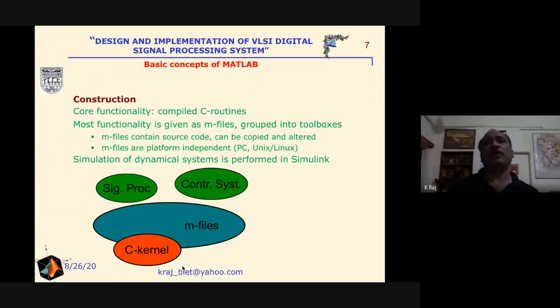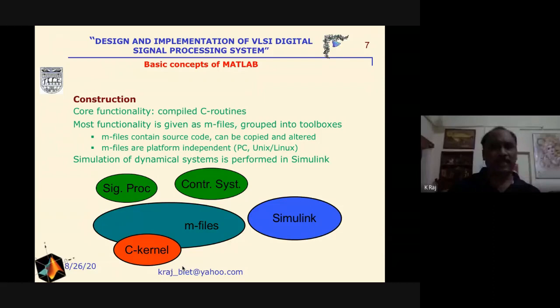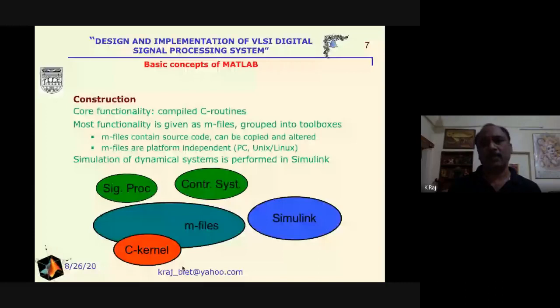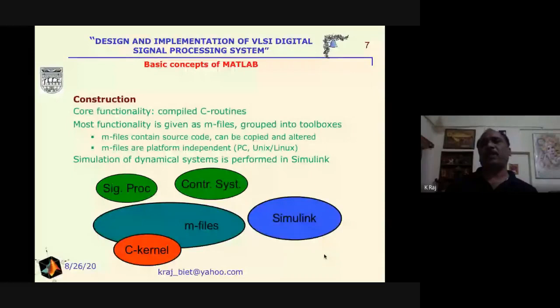If we use many .m files to cover a particular field — for example, signal processing or control systems — that is called a toolbox. When we select a toolbox, a dialog box opens, with which we can design and analyze our concepts. In digital signal processing, we utilize a toolbox called the FDA toolbox (Filter Design and Analysis toolbox). There are three concepts: the .m file, the toolbox, and Simulink, which uses .mdl files.